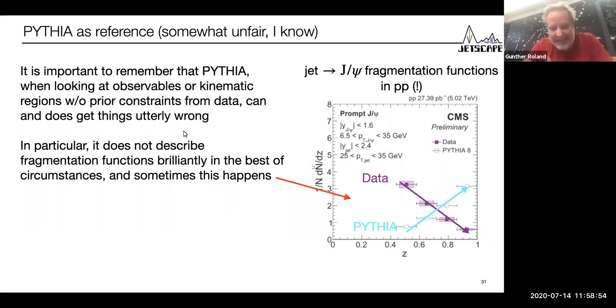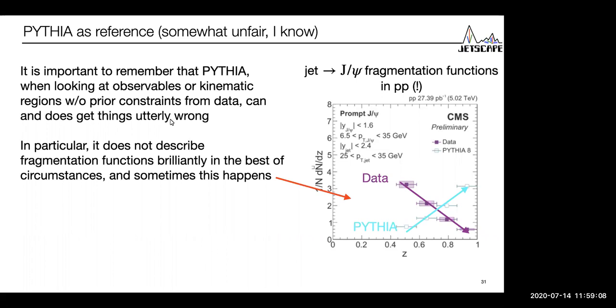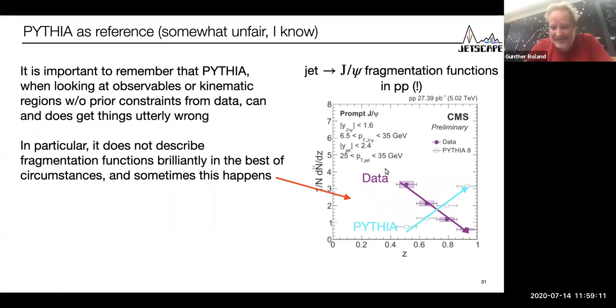Regarding the Pythia reference, this point is a little bit unfair, but I just want to put this out there as a warning. It's important to remember that Pythia, when looking at observables or kinematic regions where there are no constraints from data, it can and does get things completely wrong. Here's an example. This is the fragmentation function, jets going to J/psi + X in PP. Not even heavy ions. This is the data. This is what Pythia thinks is happening. So it's just as wrong as it could possibly be. One has to be very careful when using Pythia as a reference. It's an extremely important and useful tool, but it's not a real thing.